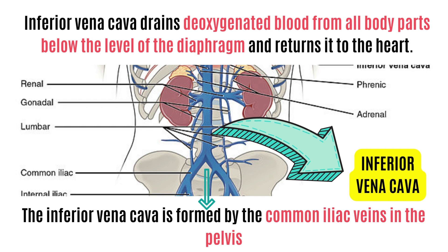Deoxygenated blood is also drawn from the hepatic, lumbar, gonadal, renal, and phrenic veins as it moves through the abdomen. After traversing the diaphragm, the inferior vena cava enters the pericardium at the level of T8. It empties into the right atrium's lower section.